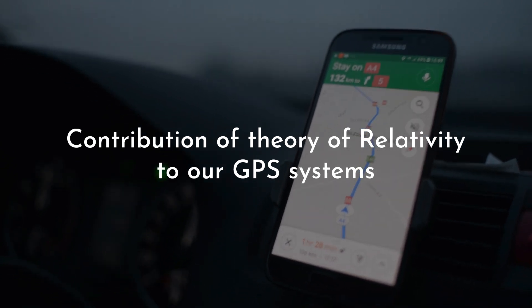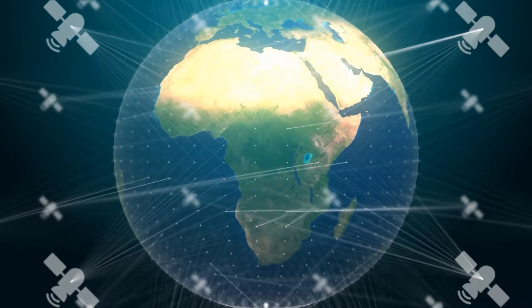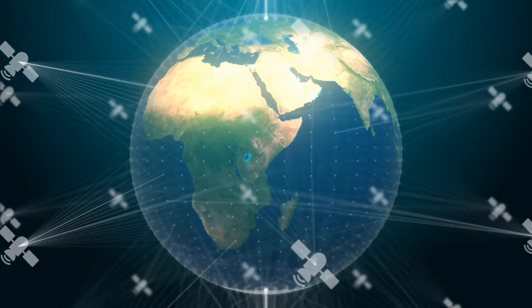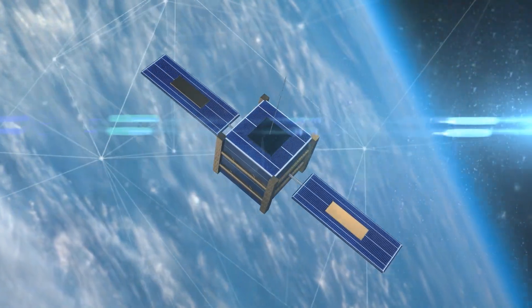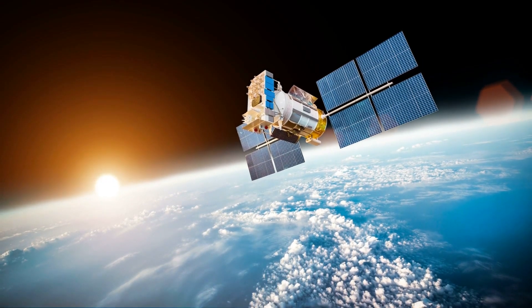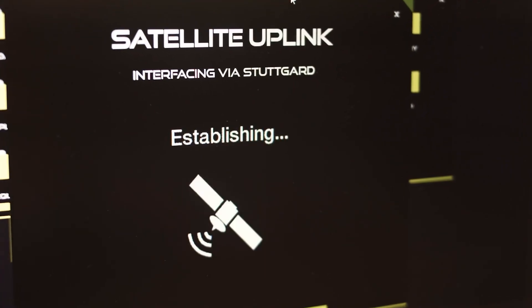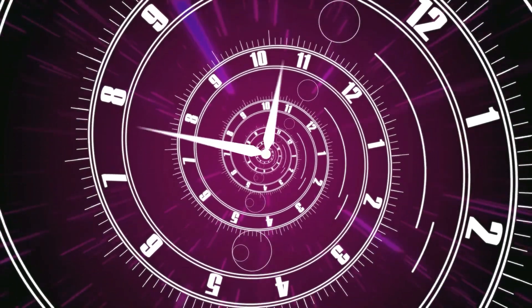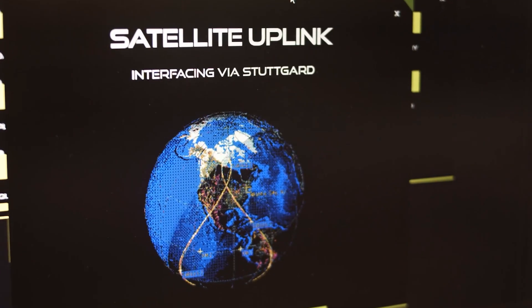Contribution of theory of relativity to our GPS systems. Those GPS satellites whizzing around Earth are moving fast and are further away from Earth's gravity. This means time ticks a bit differently for them than for us on the ground. Without correcting for this time difference, a concept known as time dilation, GPS would be way off.